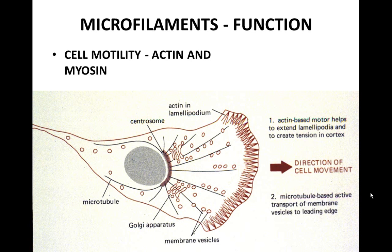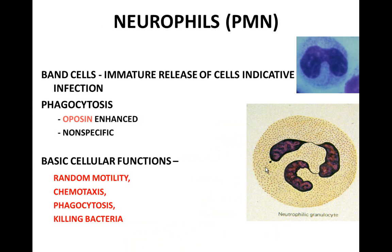Microfilaments function in cell motility — actin and myosin work together for cell motility to occur. At the front of a moving cell, actin microfilaments push the membrane out, while microtubules direct vesicles from the centrosome to supply plasma membrane for that advancing location. Looking at neutrophils, phagocytosis is enhanced by opsonized components, and today we examine their random motility and chemotaxis — the directed movement of cells toward a chemical stimulus.